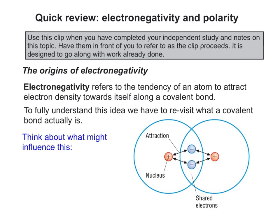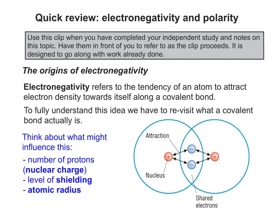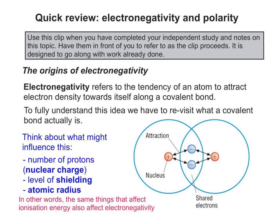Pause the clip and have a think about what might influence this — in other words, what might cause the shared electrons to become more attracted to one nucleus compared to another? Things like nuclear charge, level of shielding, and atomic radius will all play a part in determining how effective a nucleus is at attracting electrons towards itself. The same things that affect ionization energy also affect electronegativity at the atomic level.